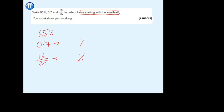Here are the answers. I converted everything into percentages: 65% stays as is, 0.7 = 70%, and 16/25 — multiply top and bottom by 4 — gives 64%. Getting two out of three correct would earn the first mark. Now put them in order smallest to largest: smallest is 16/25 (64%), next is 65%, and the largest is 0.7 (70%). You don't have to convert them back to their original form — you can leave them in the common version — but I like to put them back as they were originally.